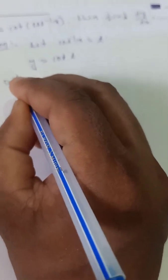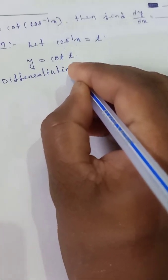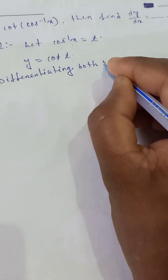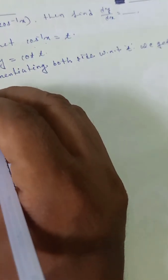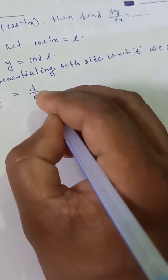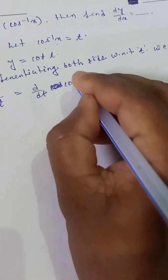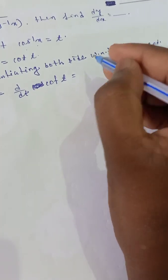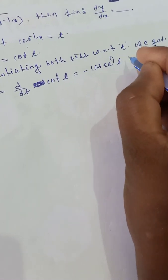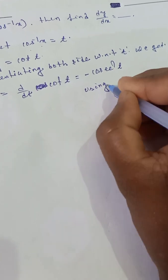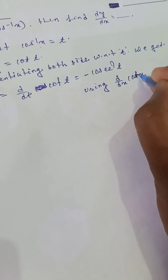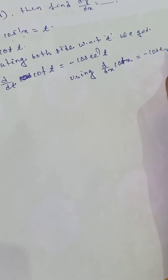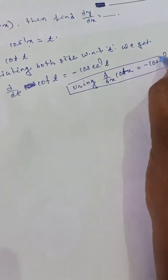Now differentiating both sides with respect to t, we get dy by dt is equal to d by dt of cot t, which is equal to minus cosec squared t. Using the formula: d by dx of cot x is equal to minus cosec squared x.